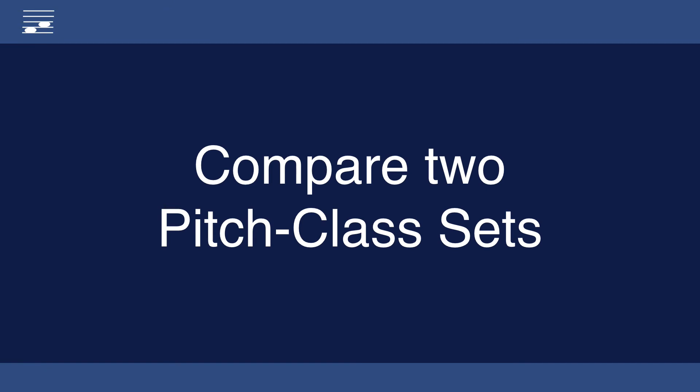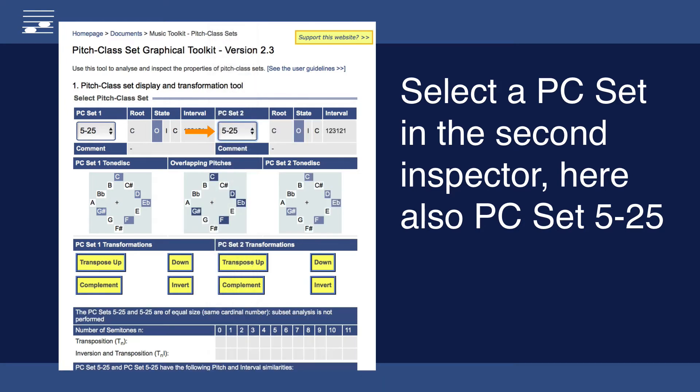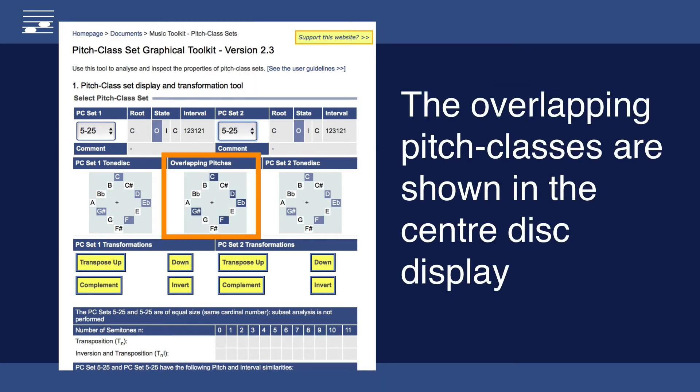Another option is comparing two pitch class sets. There is a second pitch class set inspector in the tool and I now load set 5-25 on both sides. The pitch disk diagram in the center shows the overlap between the two sets.